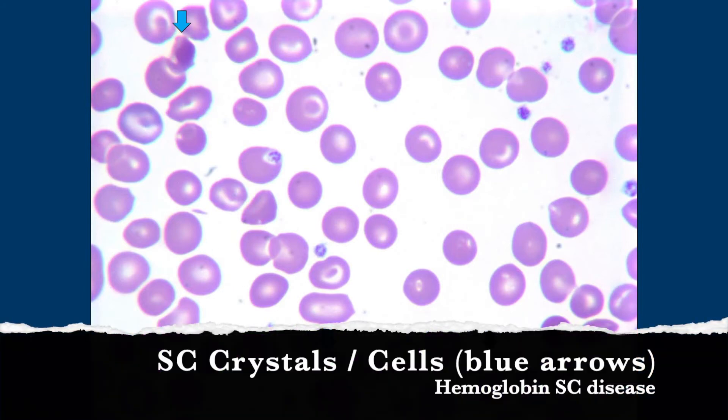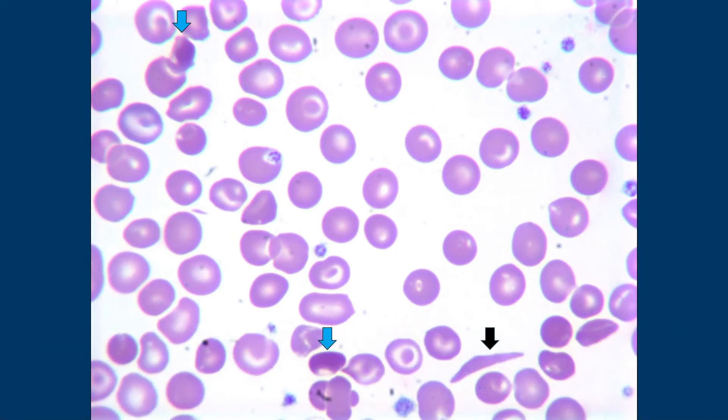So those are either called SC crystals or SC cells. This patient has hemoglobin SC disease instead of hemoglobin SS sickle disease. It's a combination of hemoglobin C and hemoglobin S together, and hemoglobin SC makes these irregular crystals.